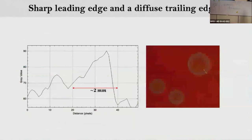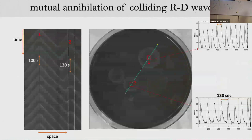If you take a snapshot and plot line intensity, you confirm a sharp wavefront but diffusive wave back. To quantify competition between wave centers: the first wave center oscillates at a period of 100 seconds, while the second has a slightly larger period and smaller frequency. In the space-time graph, with time from top to bottom, the first and second wave centers are clearly visible.